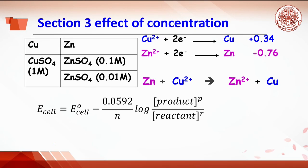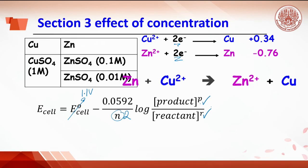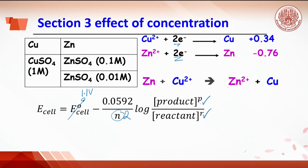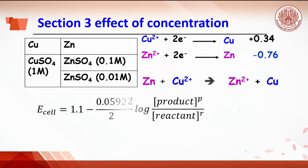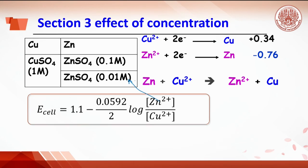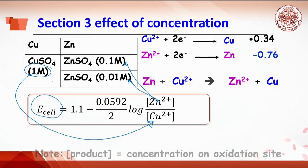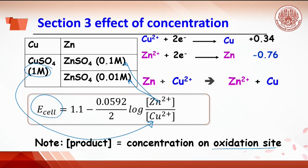What happens when the concentration of the cell changes? In Section 3, the E°_cell standard is 1.1 volts and N, the mole of electrons, is 2. Looking at the redox reaction to identify product and reactant concentrations: zinc ion is the product and copper ion is the reactant. The Nernst equation changes accordingly. Zinc concentration varies here while copper concentration remains 1 molar. Thus the EMF at different concentrations can be calculated. Note that the concentration on the oxidation side is the product.